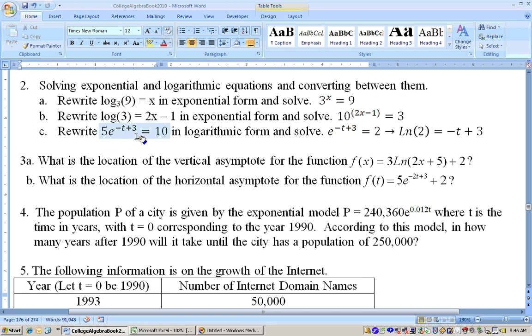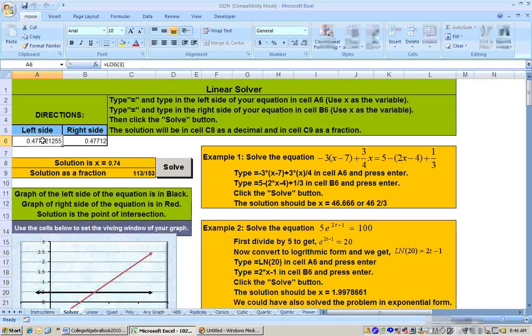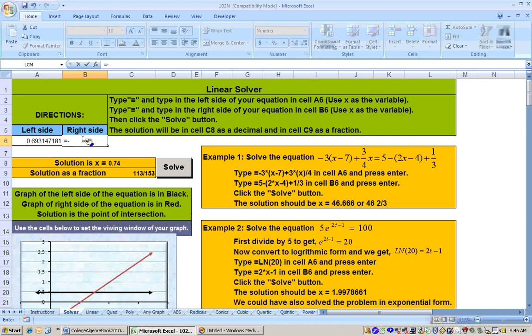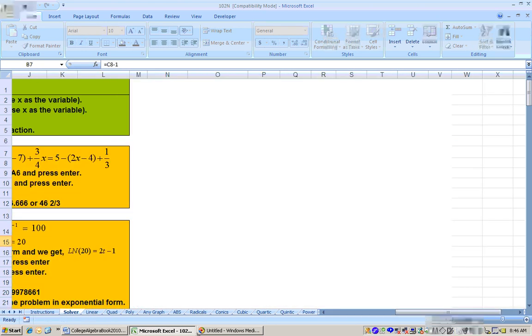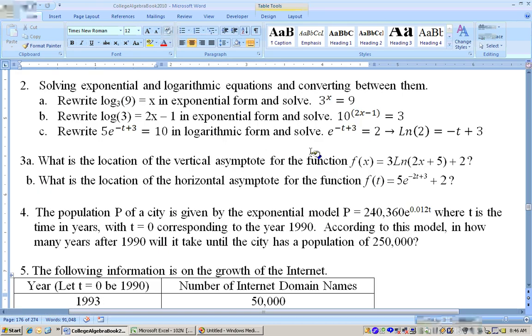Rewrite 5e raised to the negative t plus 3 equals 10 in logarithmic form and solve. Before we can write it in logarithmic form, we've got to get rid of this 5 here. So we'll divide both sides by 5 to get e to the negative t plus 3 equals 2. Now we can rewrite it in logarithmic form, and we get the natural log of 2 equals negative t plus 3. And actually, this would be the best way to solve this problem. So let's go to the solver sheet and type in equals natural log of 2 right there. And on the other side, we'll type in equals negative x plus 3, hit enter, click solve, and we get 2.31.